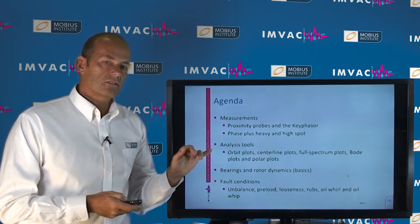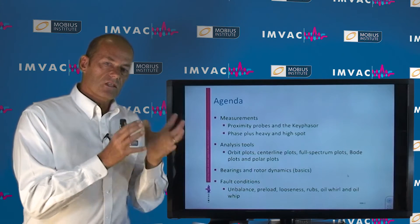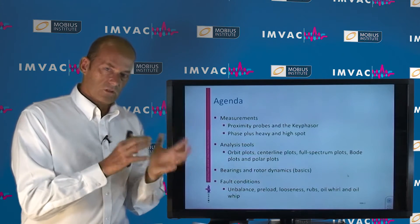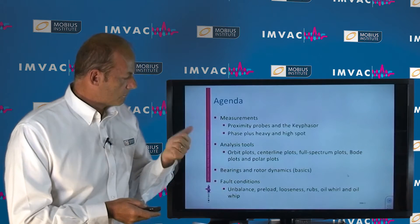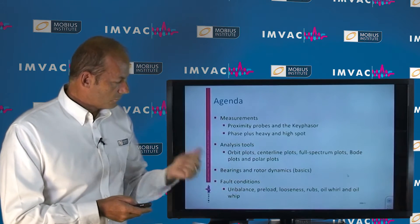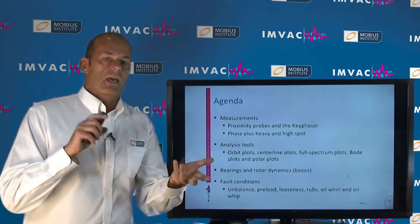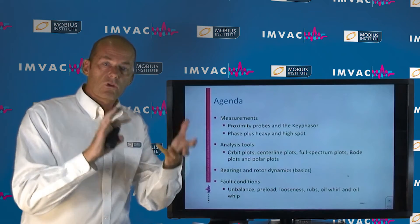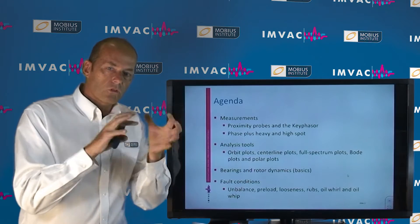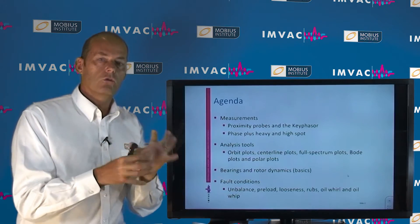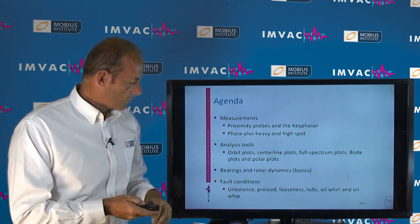Then we'll talk about the analysis tools — really clarifying what the orbit plot is and what it tells you, the centerline plots, full spectrum plot, Bode plot, and polar plot. We'll go through all of those using case studies, making sure it's crystal clear what those plots are, what they tell you, and why you'd want to use one over another.